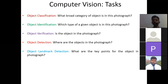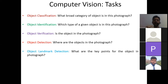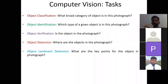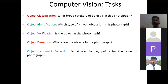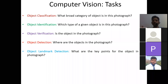Object landmark detection identifies what the key points of an object are in a photograph. For example, background-change applications in Zoom use landmark detection — they first identify key features of your face, and then the rest of the image is replaced with a background based on texture, depth, and lighting. So object landmark detection identifies those key points and then performs the corresponding action.